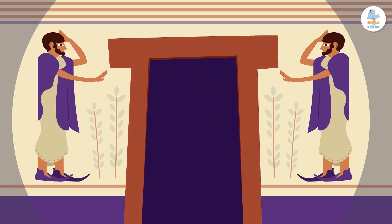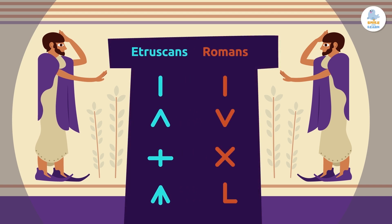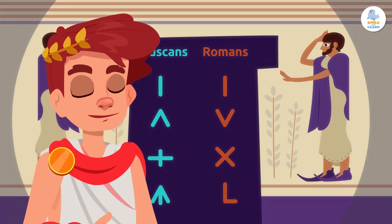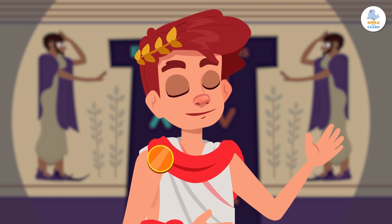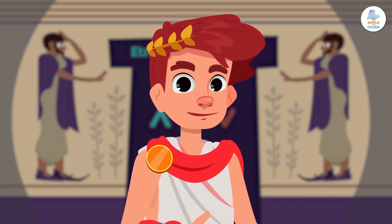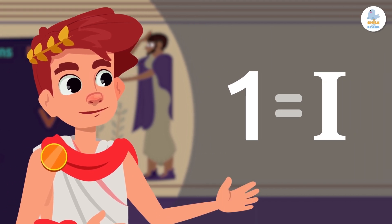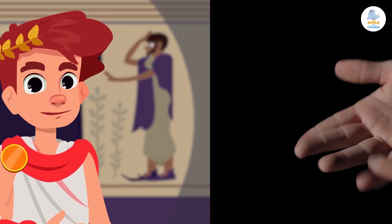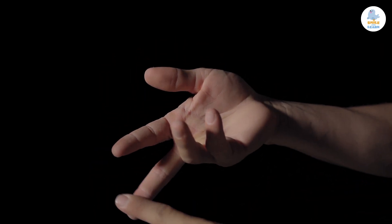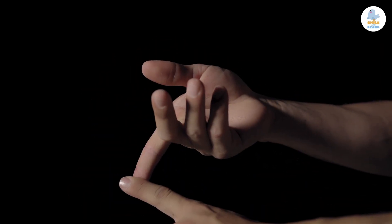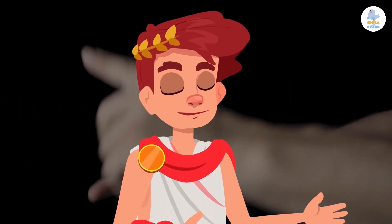The Etruscans created a numbering system using symbols, and later the Romans were inspired by them to create a similar system. The Romans represented numbers by drawing sticks — they drew as many sticks as the units they had to count. For example, the number one is represented by one stick. People think that using sticks to represent numbers started because the Romans used to count with their fingers, just like when we were little.